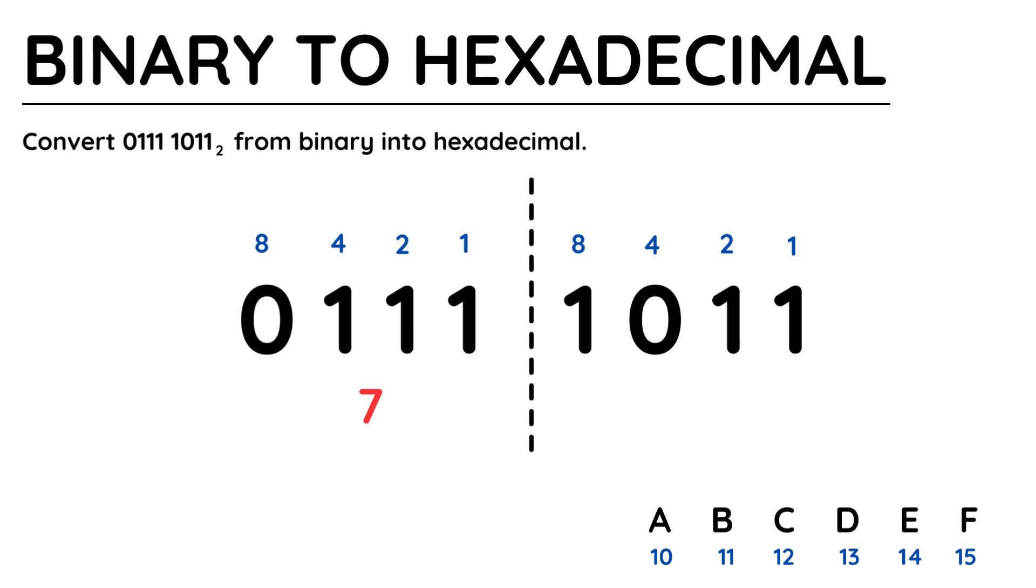Working out the value of the characters is quite straightforward, you just add together the numbers if there's a 1 beneath it. So the first character on the left is 7, because we add 4, we add 2, and we add 1. The second character is 8 plus 2 plus 1, which makes 11.